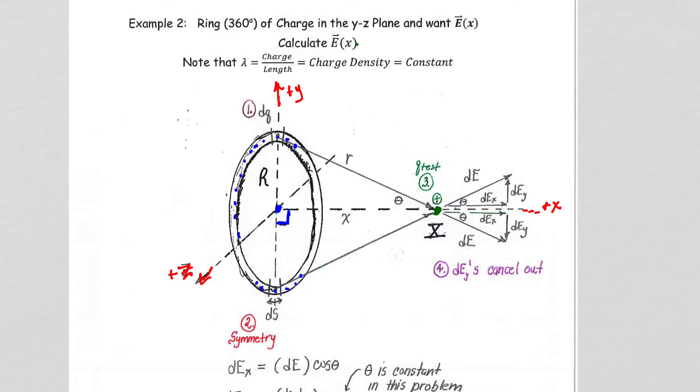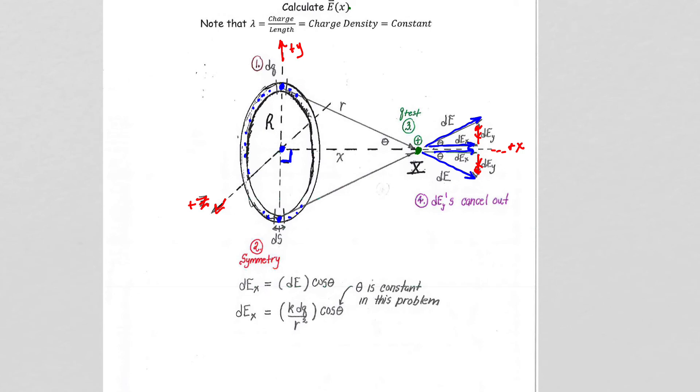So again, you'll notice similarities to what we did in our last example. We put a dq in, and we look at the electric field dE from that dq. We put a symmetric dq in if we can, and we can in this case, and get this dE. We then get the two dEx's in the positive x-direction. The two dEy's cancel out, so we have only dE in the x-direction by symmetry, so we are going to get all that into our solution.